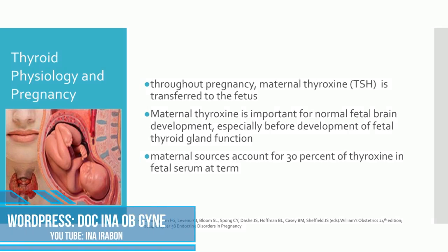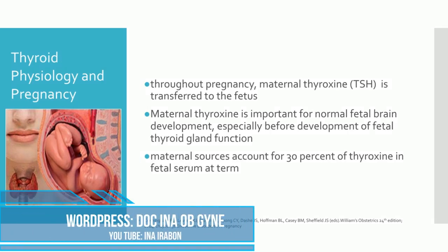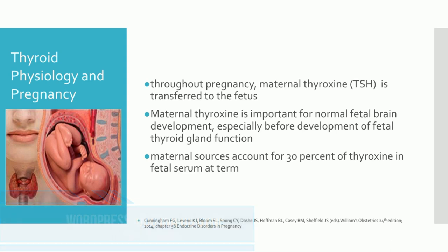Throughout pregnancy, maternal thyroxine is transferred to the fetus. Maternal thyroxine is important for normal fetal brain development, especially before development of fetal thyroid gland function. Even though the fetal gland begins concentrating iodine and synthesizing thyroid hormone after 12 weeks age of gestation, maternal thyroxine contribution remains very important. In fact, maternal sources account for 30% of thyroxine in fetal serum at term.